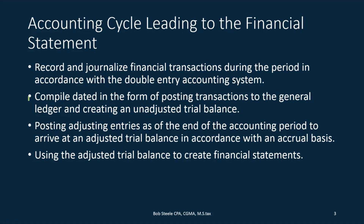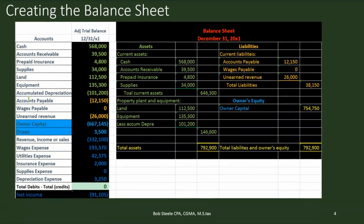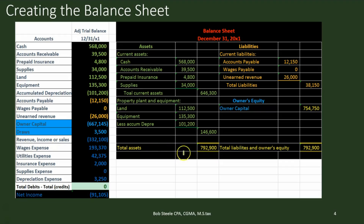We're going to make the financial statements based on that adjusted trial balance. So creating the balance sheet — remember, the balance sheet is as of a point in time. It is the accounting equation. We have assets, we have liabilities, we have owner's equity. The assets will equal the liabilities plus the owner's equity.